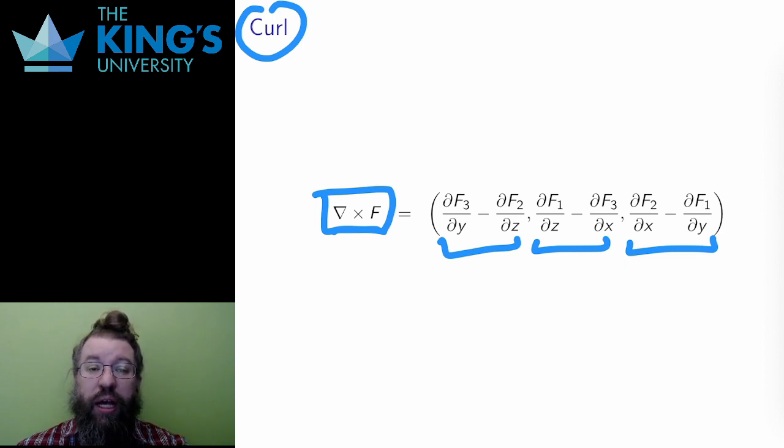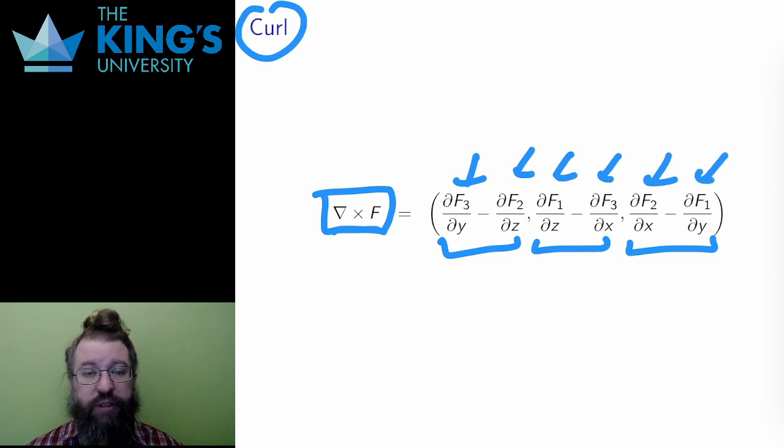This is called the curl of a vector field, and it is the first of the two new derivatives. It is a combination of the various partial derivatives of the component functions of the vector field. Like scalar fields, all of the generalizations of the derivatives are somehow made out of various partial derivatives. So what does this one do?